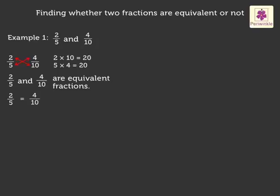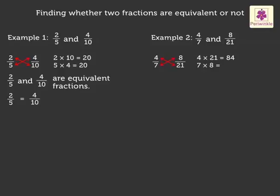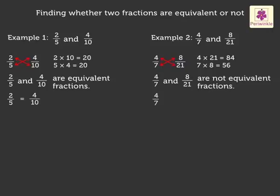Now, let us see another example. Four upon seven and eight upon twenty-one. Here, on cross-multiplying the numbers, we get four into twenty-one is equal to eighty-four and seven into eight is equal to fifty-six. Here, both the products are different. Thus, four upon seven and eight upon twenty-one are not equivalent fractions. We write it as four upon seven is not equivalent to eight upon twenty-one.